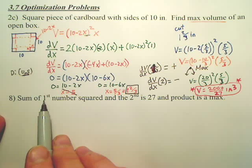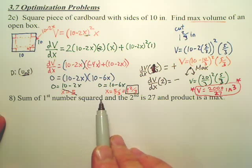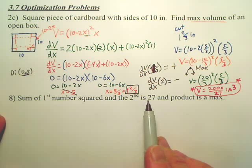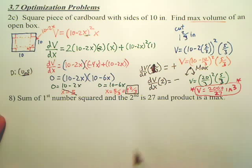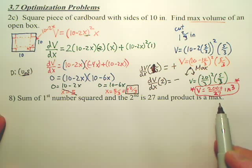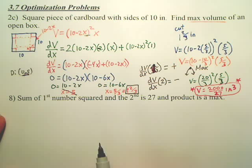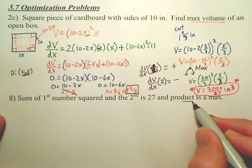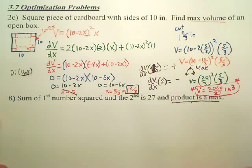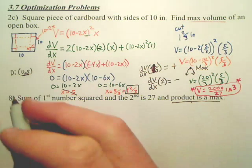The sum of two numbers, the first one squared and the second is 27. The product is a max. So what are we maximizing? We are maximizing a product. How many numbers are we dealing with? Two.